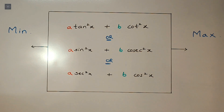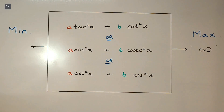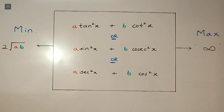Here we have the trick. Whenever we are dealing with any of these three expressions — a·tan²x + b·cot²x, or a·sin²x + b·cos²x, or a·sec²x + b·cos²x — the maximum value of the expression is infinity, and the minimum value is 2√(ab). So just remember: maximum is infinity and minimum is 2√(ab).